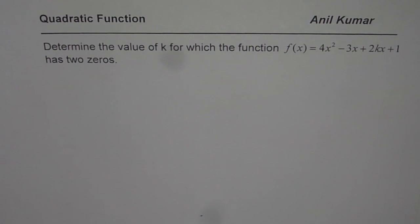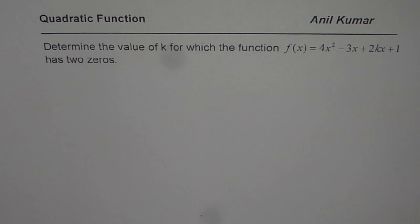Now the question here is: determine the value of k for which the function f(x) equals 4x squared minus 3x plus 2kx plus 1 has two zeros.